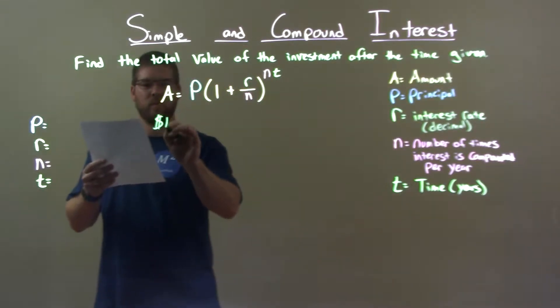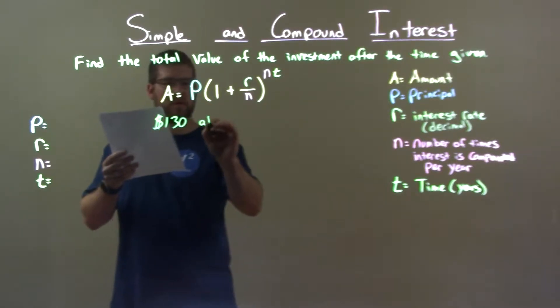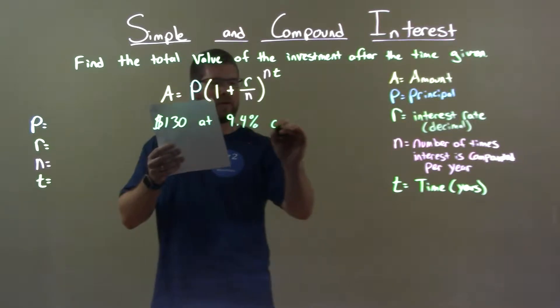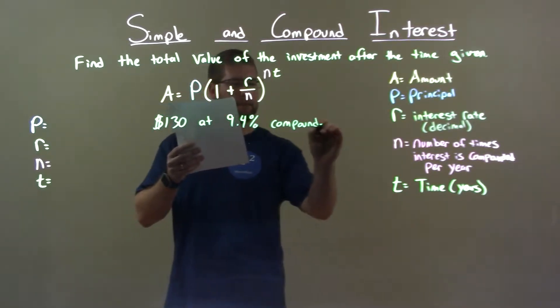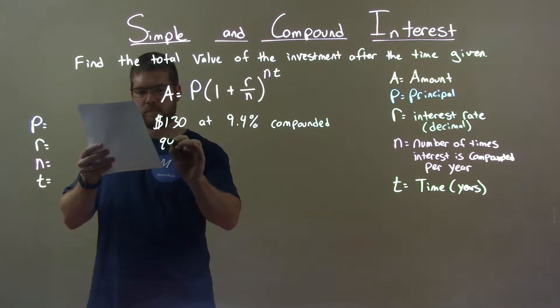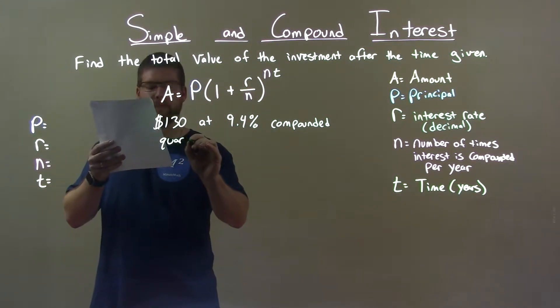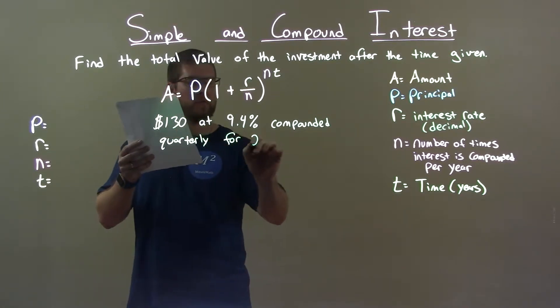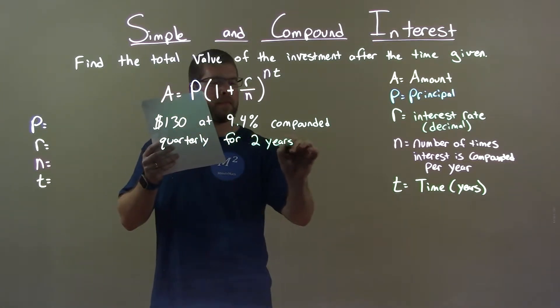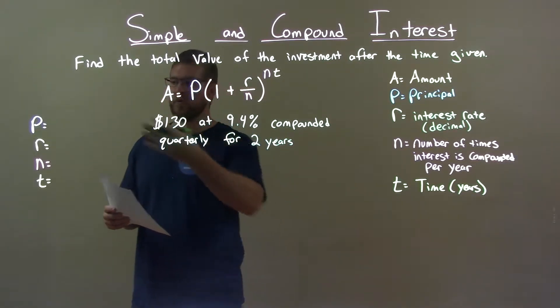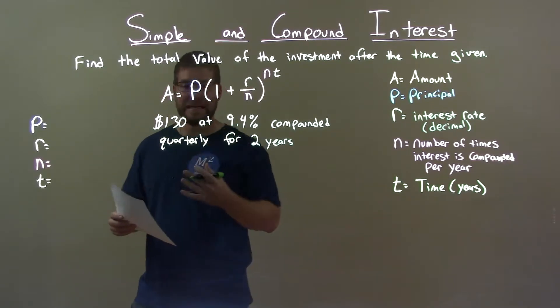$130 at 9.4% compounded quarterly for 2 years. Alright, we're compounding quarterly for 2 years. I take that information from the word problem and let's go find our missing variables here that we need.